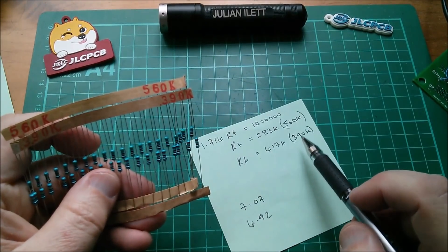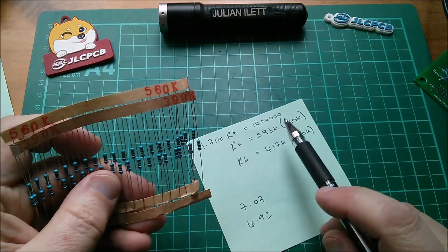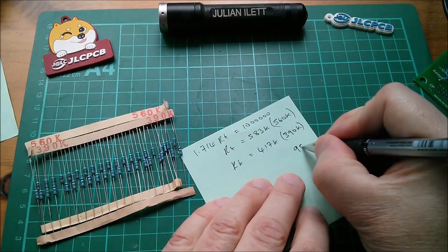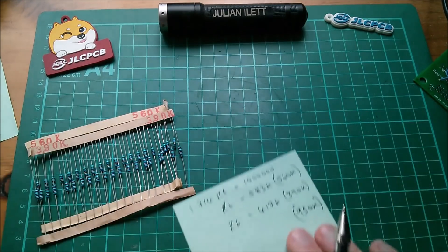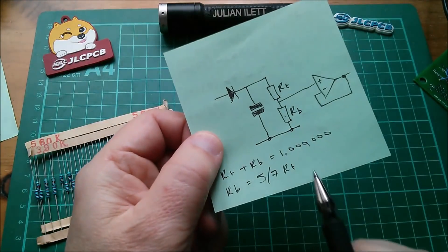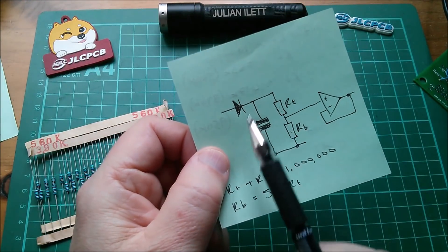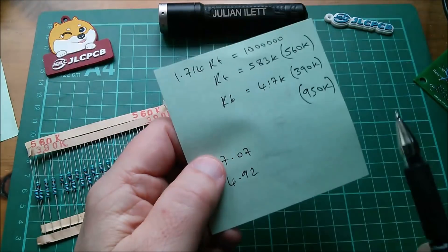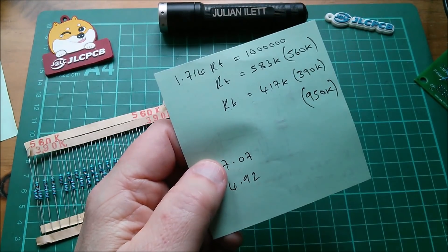First things first, the sum of these two: 560 plus 390 is 950k, which is not too far removed from one megaohm, so I think that would be fine. The discharge on this resistor would be slightly quicker, but not by much, so that's okay. Now what about the ratio, 390 to 560?